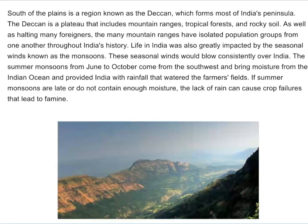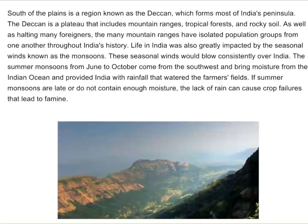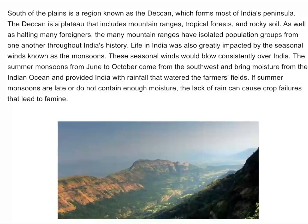Life in India was also greatly impacted by the seasonal winds known as monsoons. These seasonal winds would blow consistently over India. The summer monsoons, from June to October, come from the southwest and bring moisture from the Indian Ocean, providing India with rainfall that watered the farmers' fields. If summer monsoons are late or do not contain enough moisture, the lack of rain can cause crop failures that lead to famine.